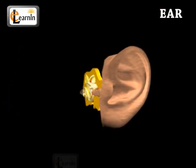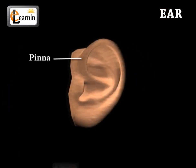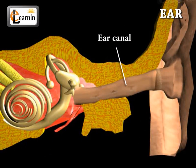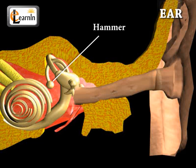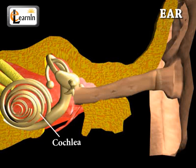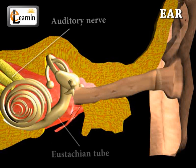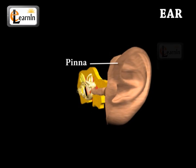There are nine main parts of the ear: the pinna, the ear canal, the eardrum, the hammer, the anvil, the stirrup, the cochlea, the Eustachian tube, and the auditory nerve.